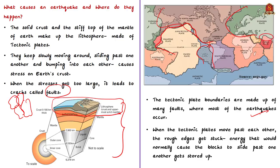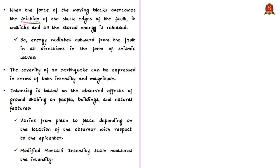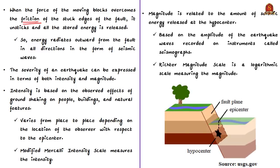When the tectonic plates move past each other, the rough edges get stuck. The energy that would normally cause the blocks to slide past one another is stored up. When the force of the moving blocks finally overcomes the friction of the stuck edges of the fault, it unsticks and all the energy is released. This energy radiates outward from the fault in all directions in the form of seismic waves — like ripples on a pond — shaking the earth as they move through it and shaking the ground when they reach the surface.